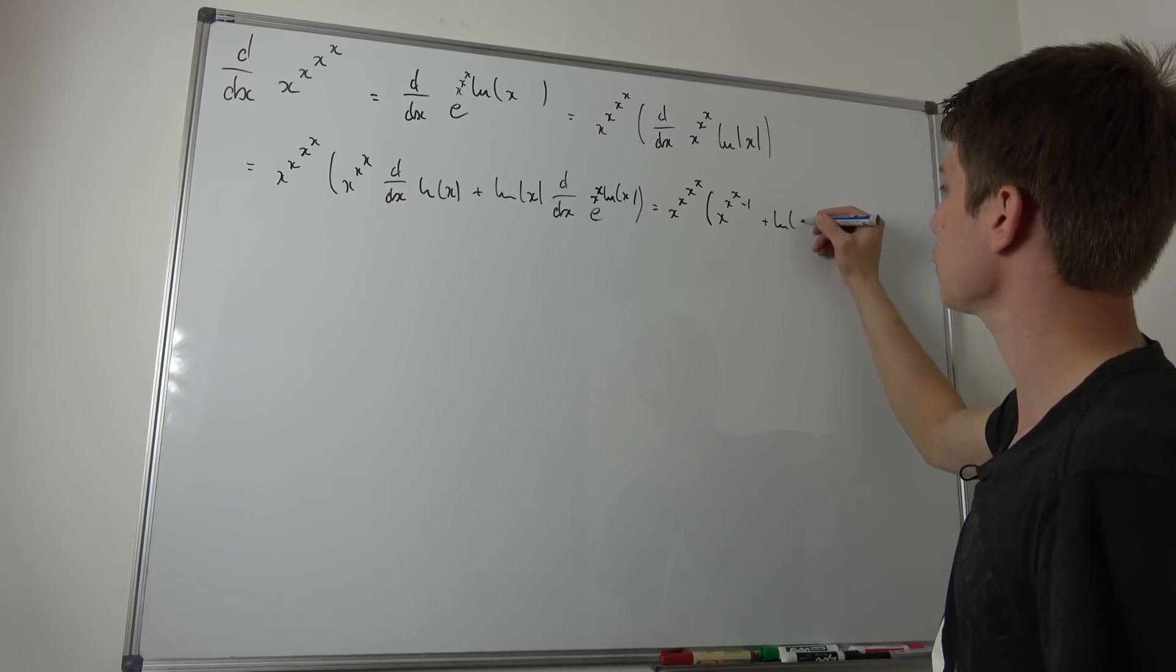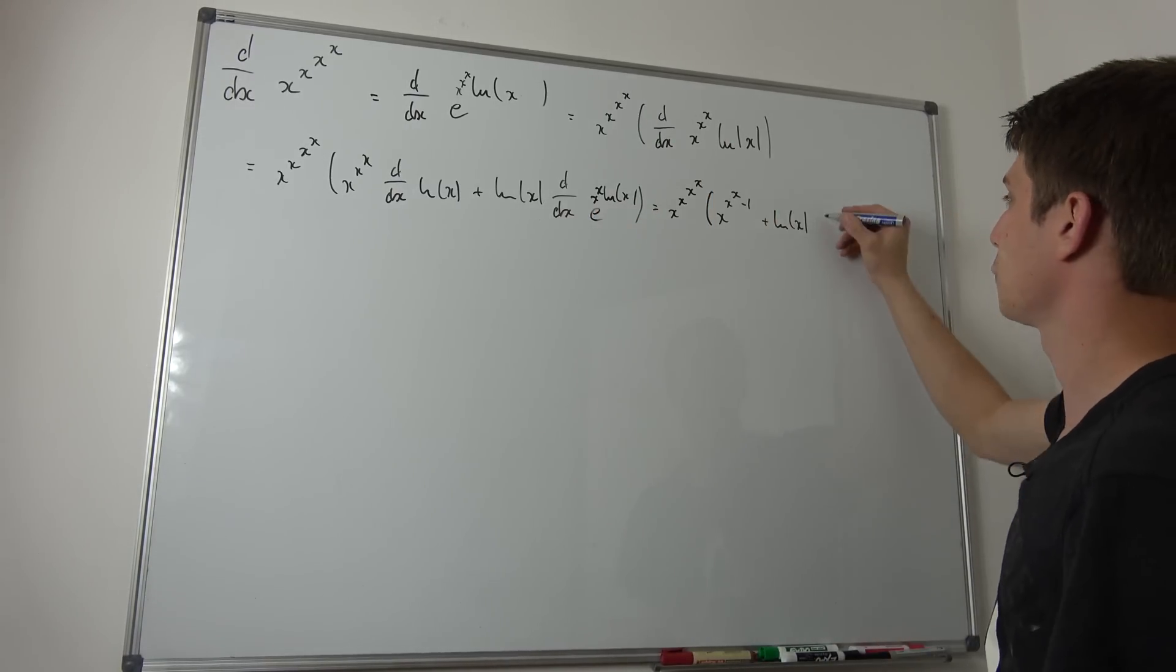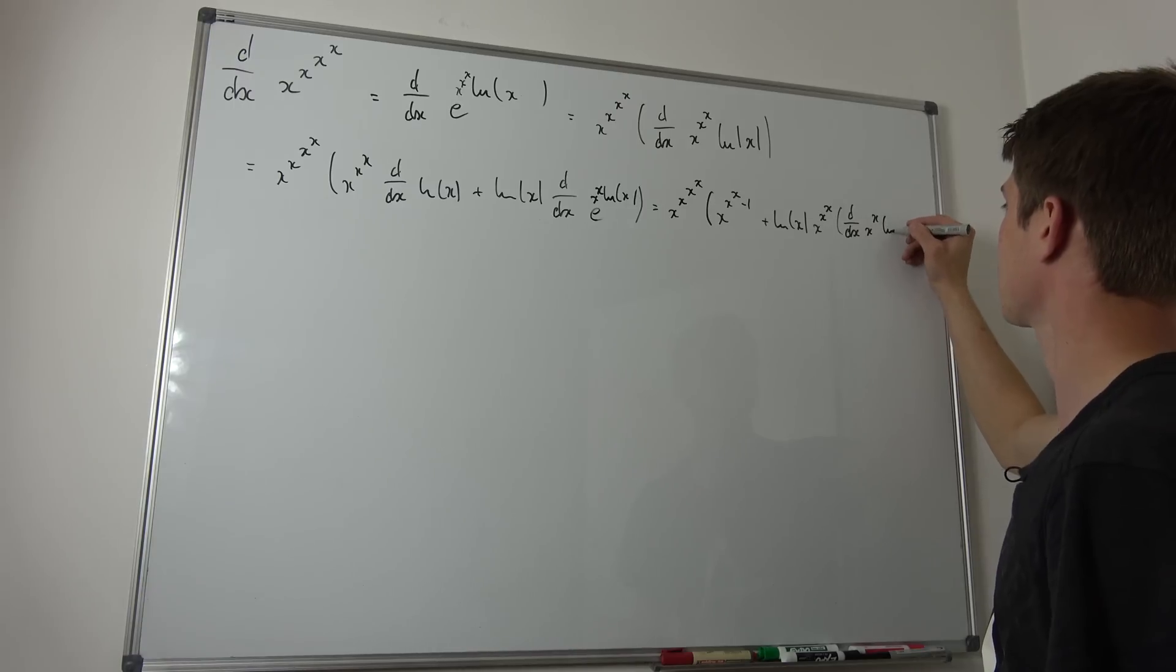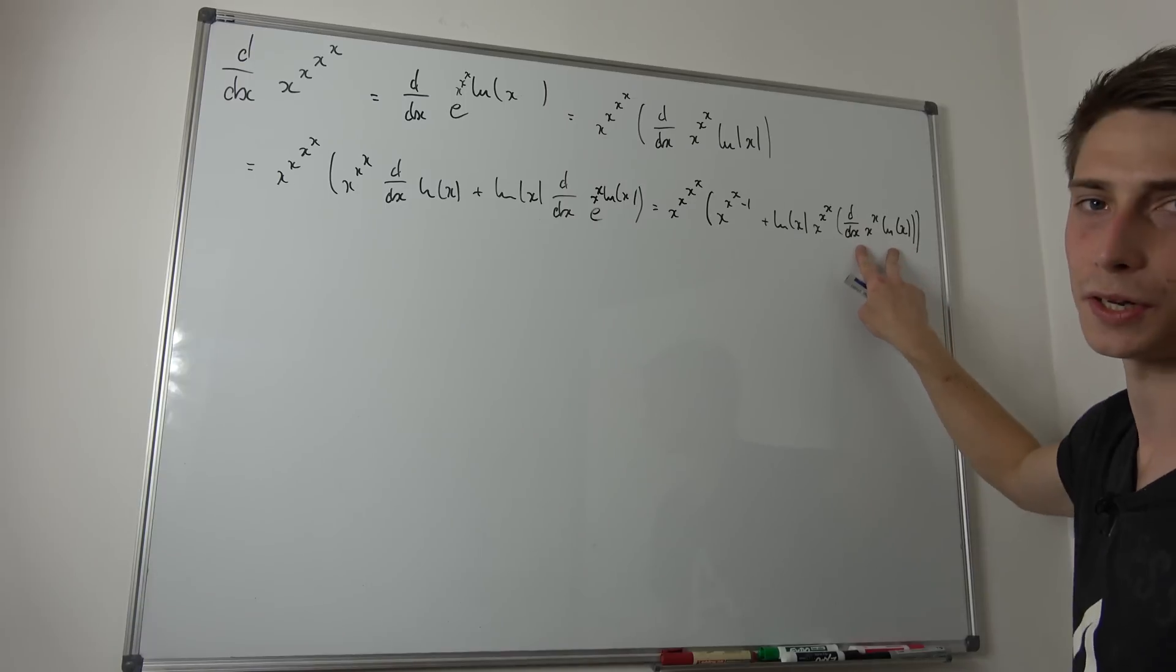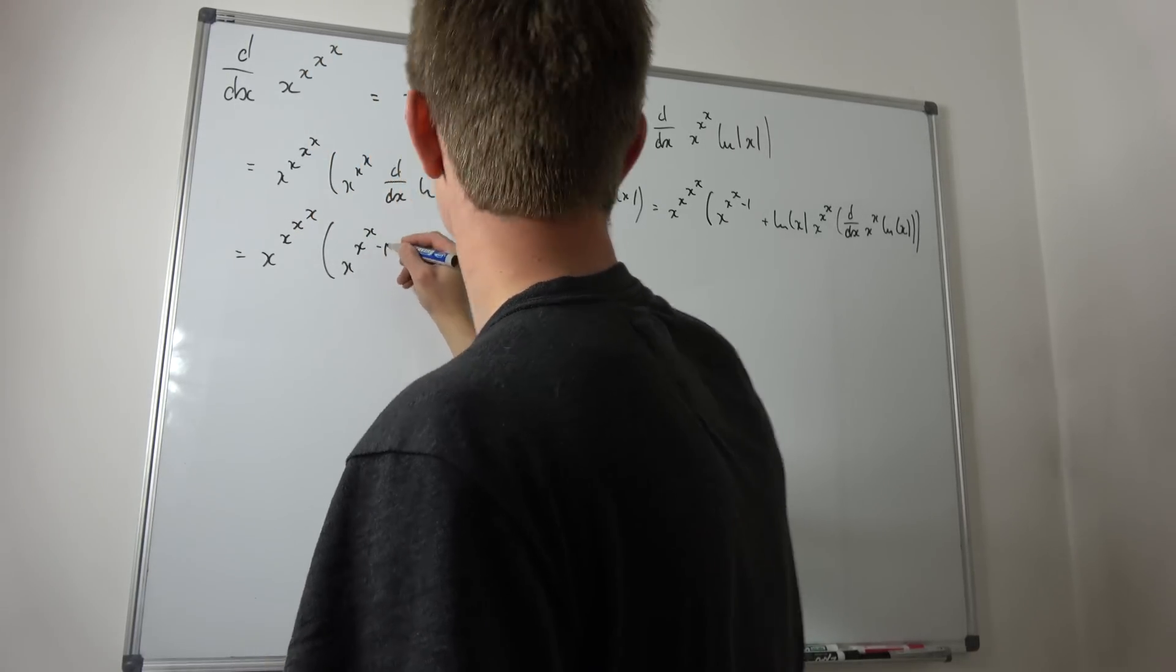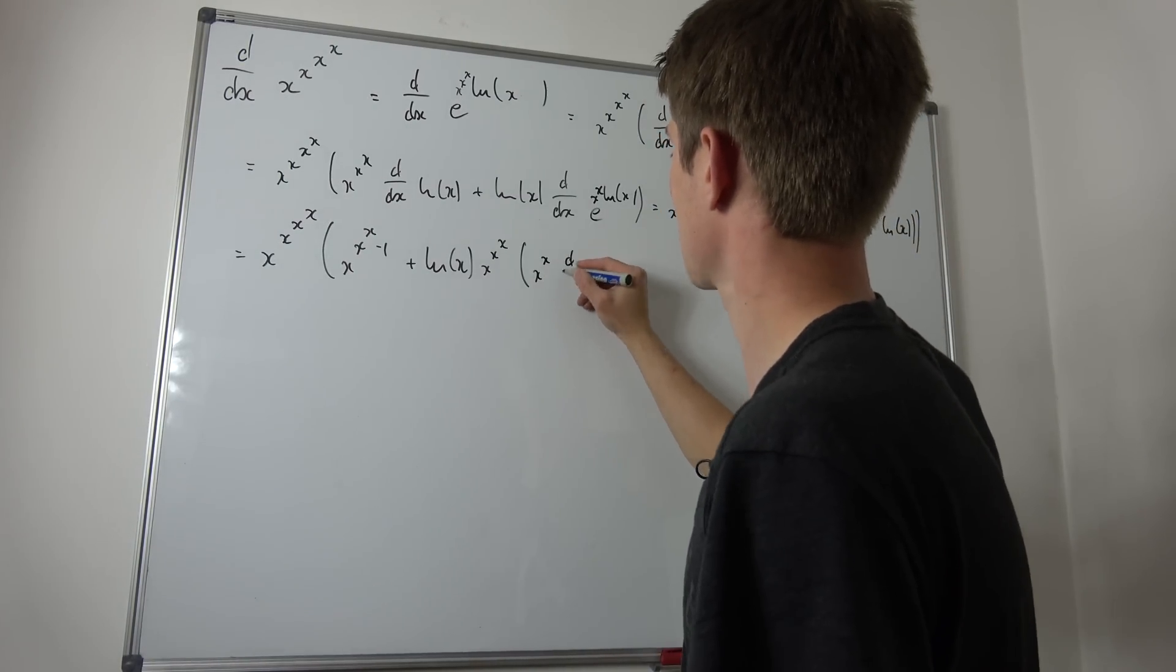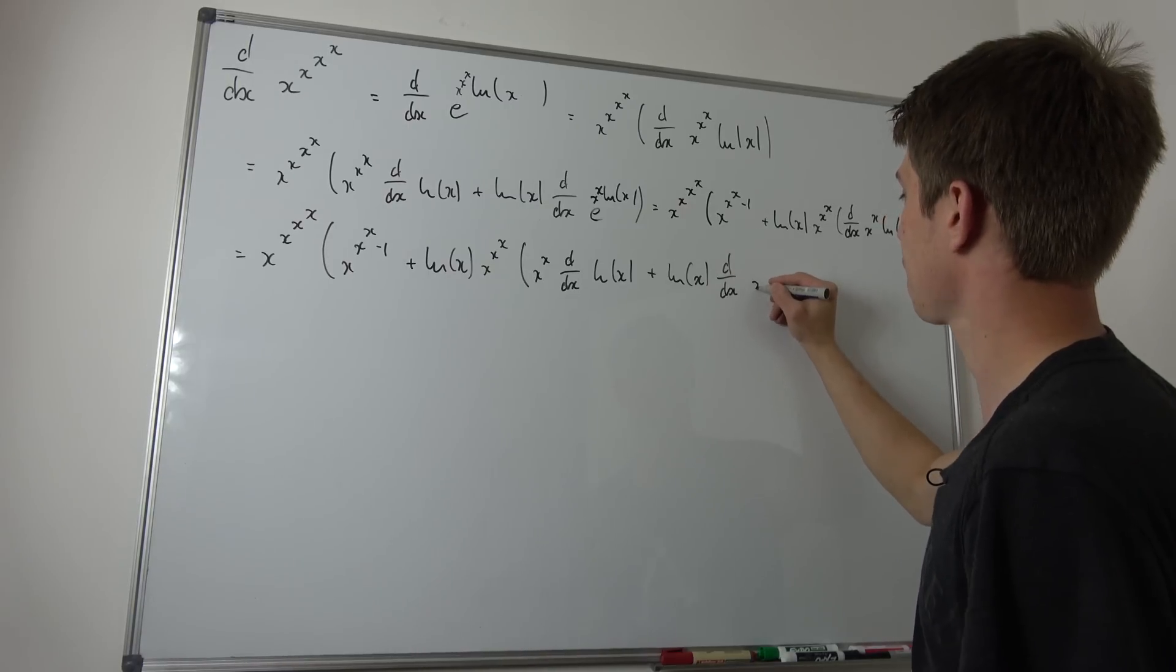So differentiating ln(x) is not too hard - that's 1/x. So this is x^(-1). We can bring those two together. So at first we have x^(x^x) times, and now we have x^x but minus 1. That's the 1/x term. Plus the natural log of x. And differentiating this will leave us with nearly the same result as before. So now we have this first term which is just x^x - this will stay as it is - and then times the inner derivative d/dx of x^x times the natural log of x.